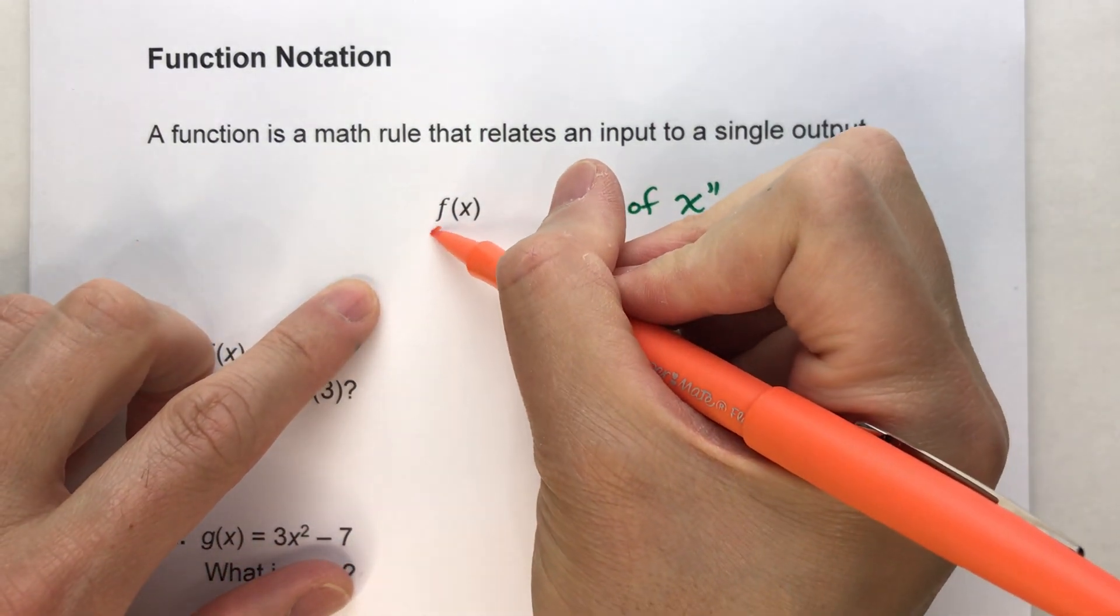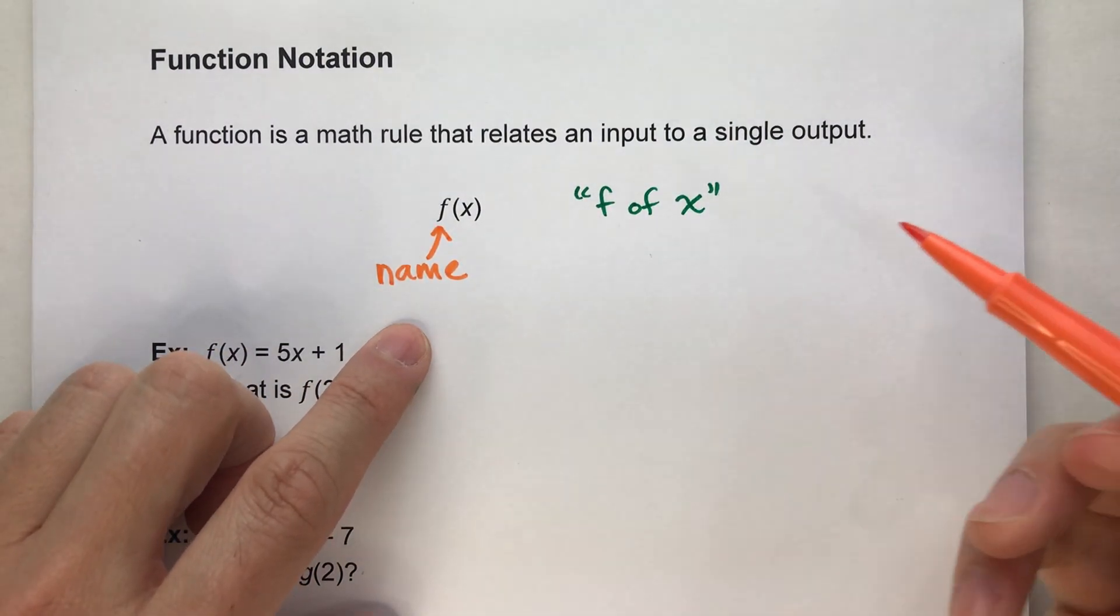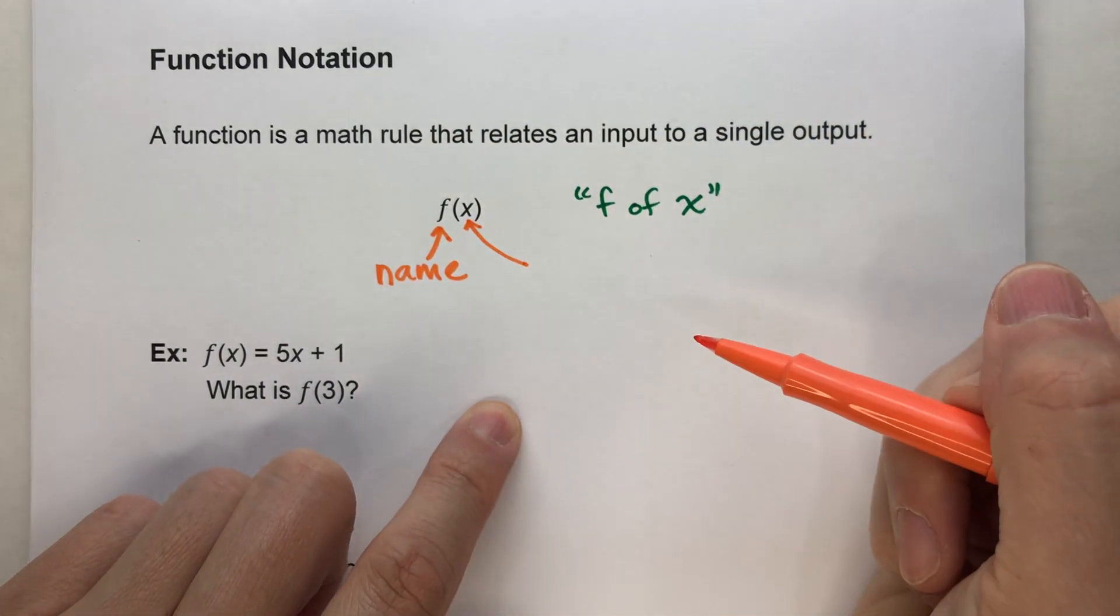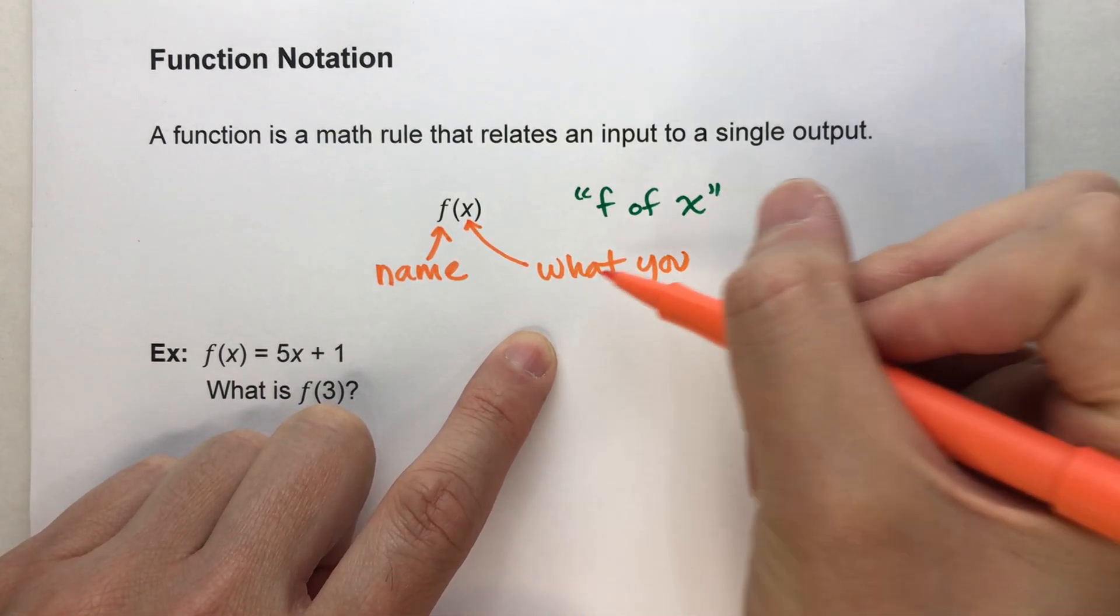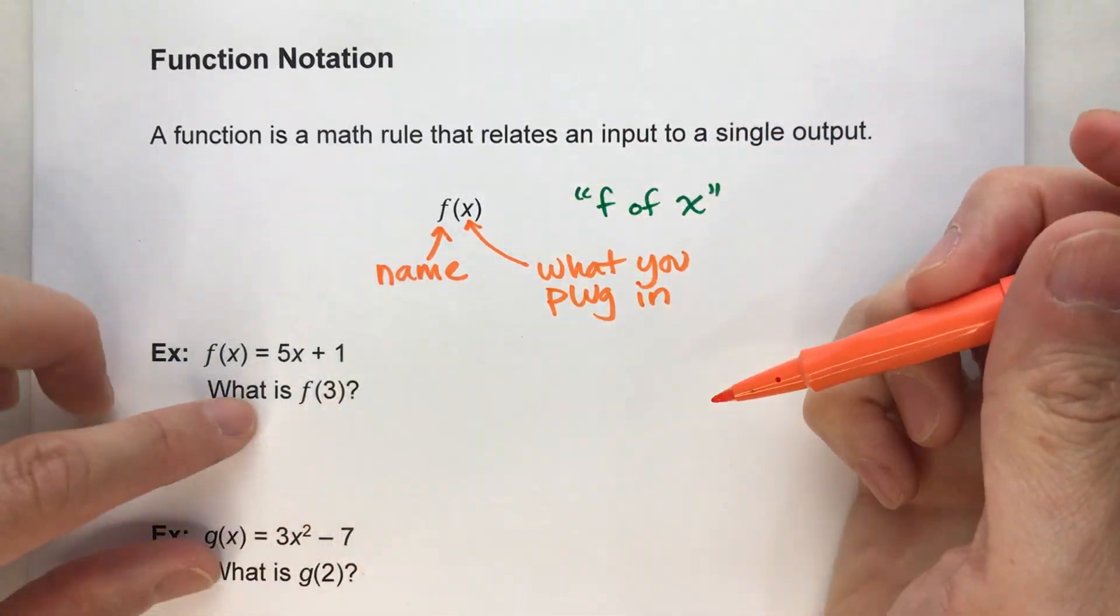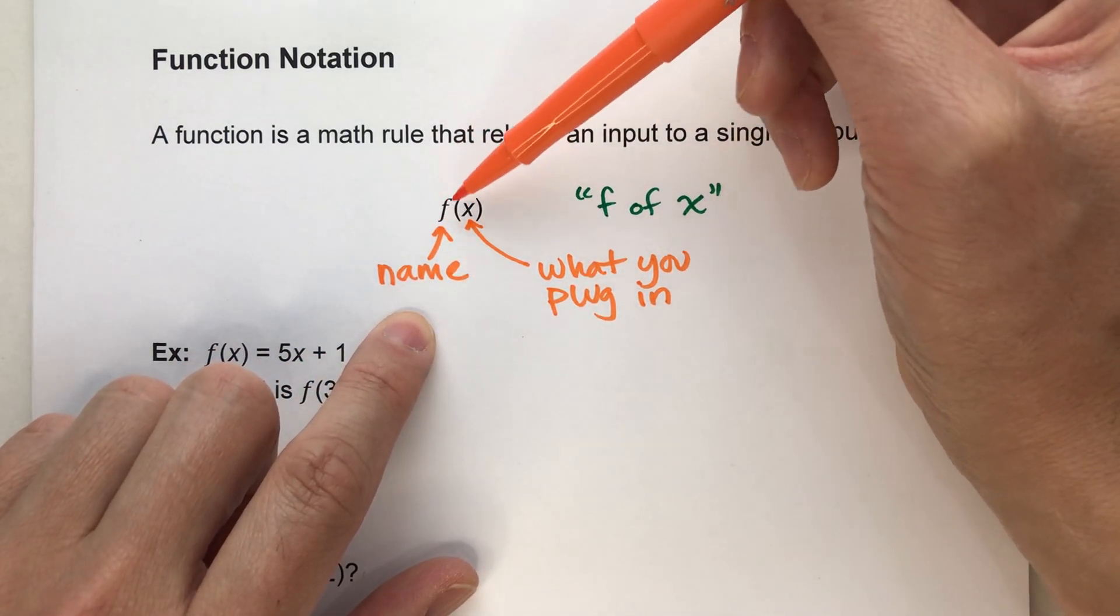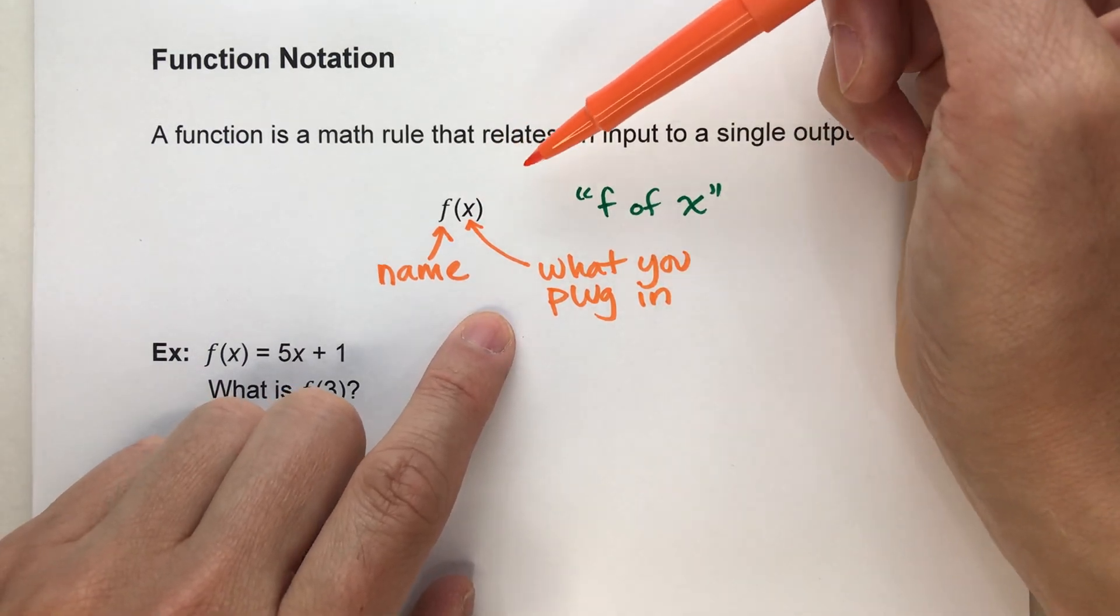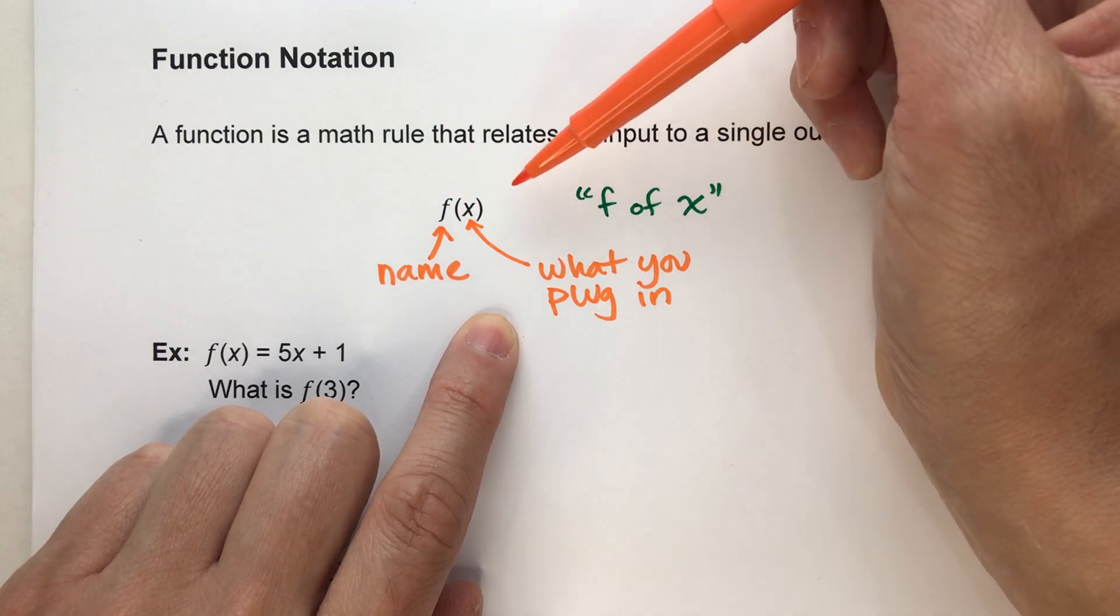Now the f, that's the name of the function rule. f of x means we have a function rule called f and we're putting x into it. And we could put any number into it, it doesn't have to be x, it could be a 2, it could be a 5, it could be a 7, any number.